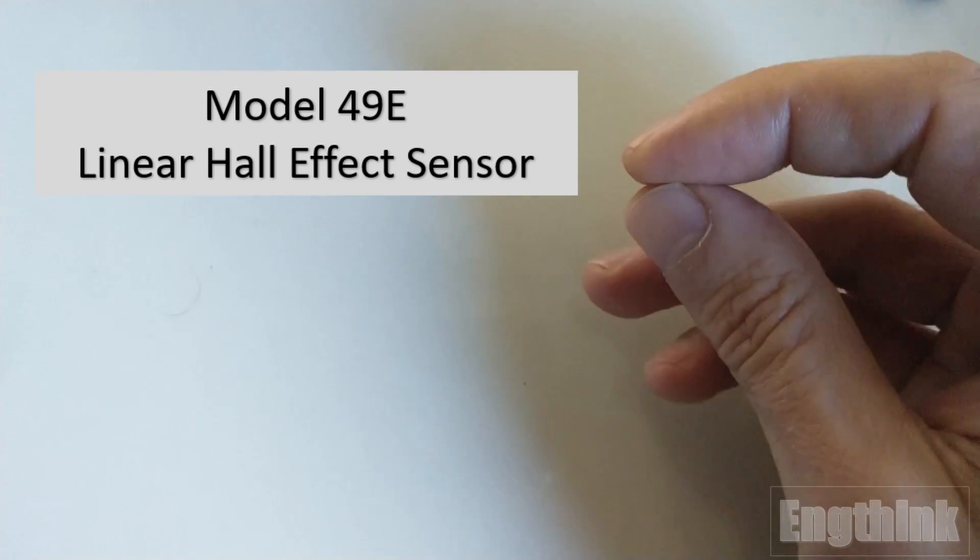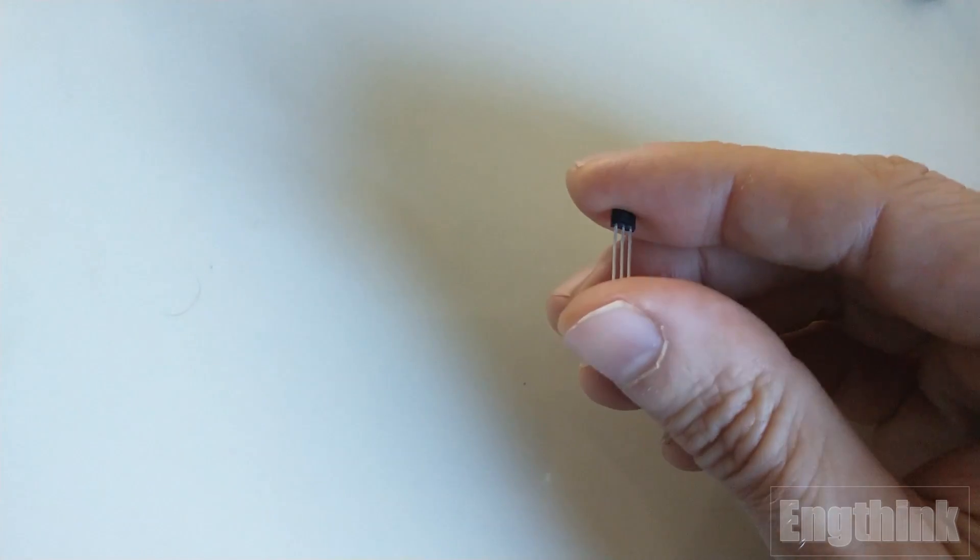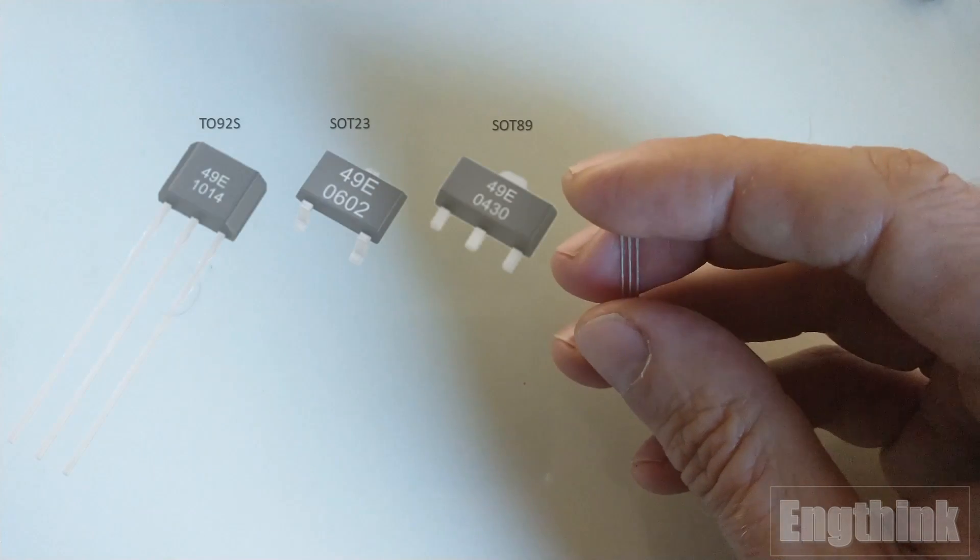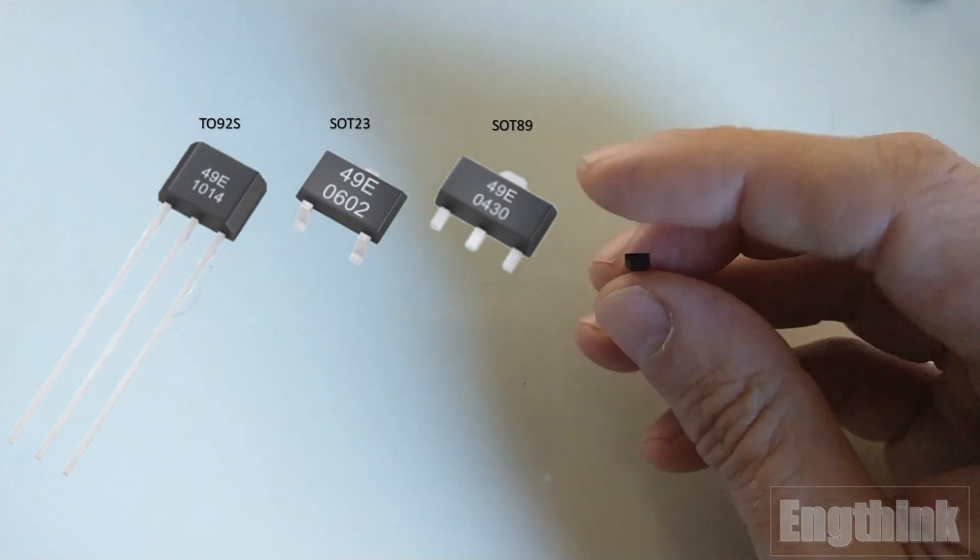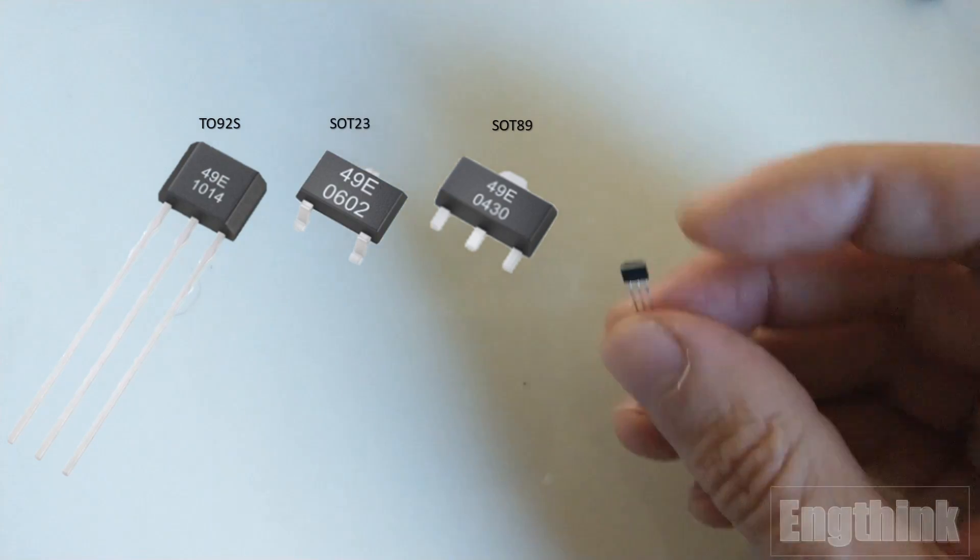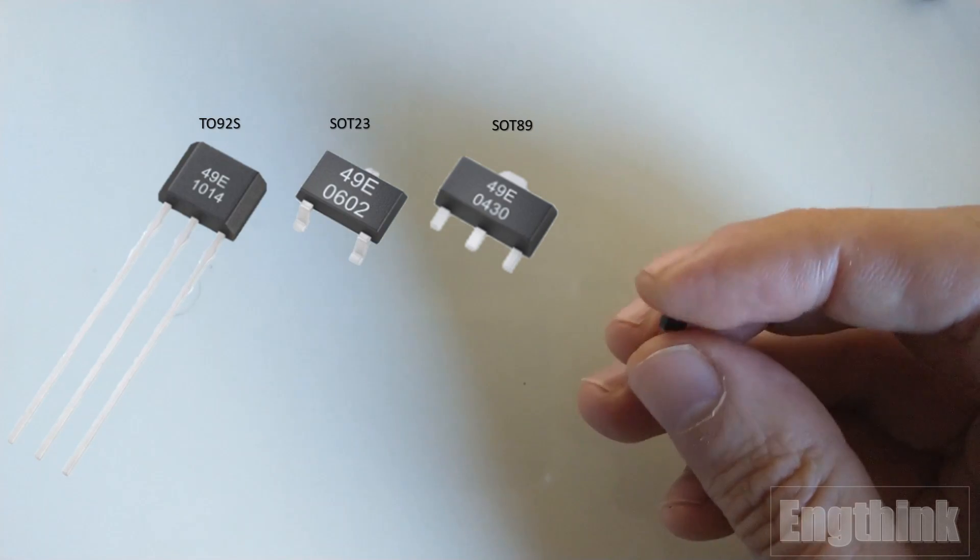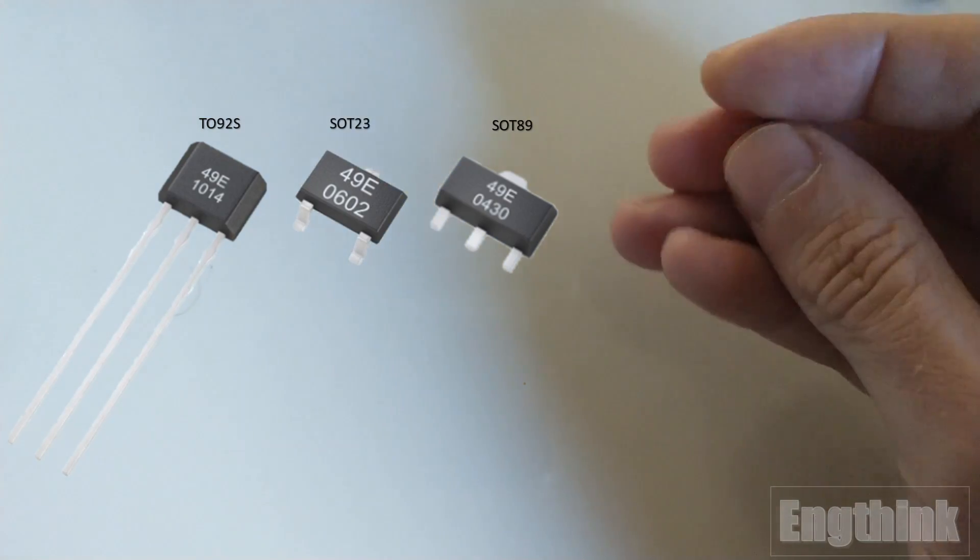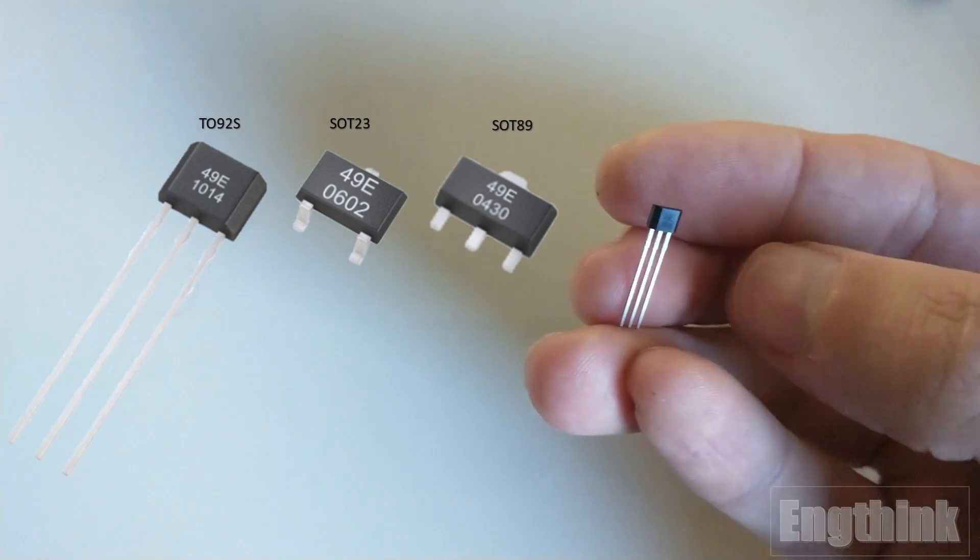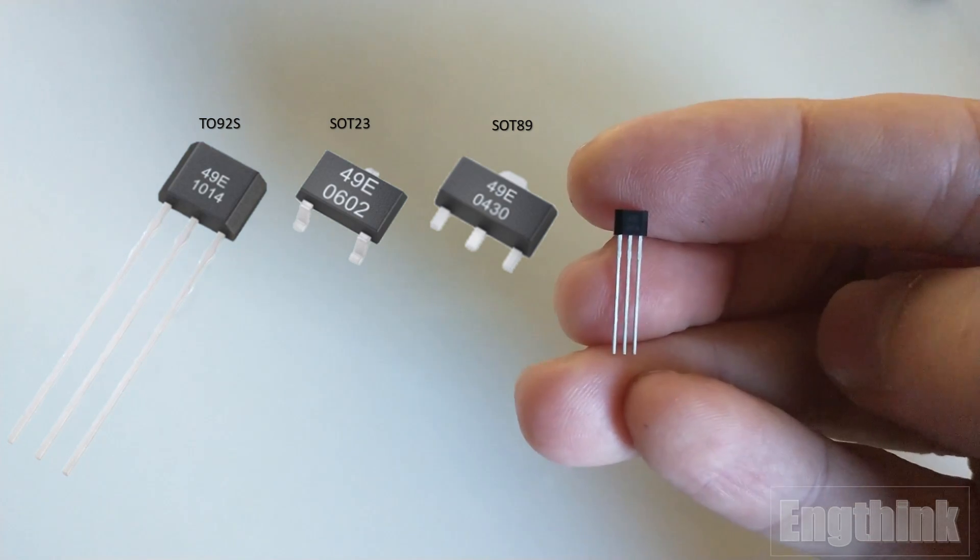Another important aspect is the encapsulation of the Hall effect sensors. As you can see, there are at least three different models. One is the TO-92X that we are going to use for this test. There are also other models designed for mounting on the surface of a PCB, such as SOT-23 and SOT-89.